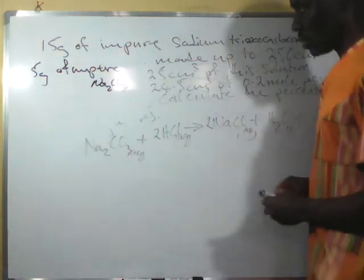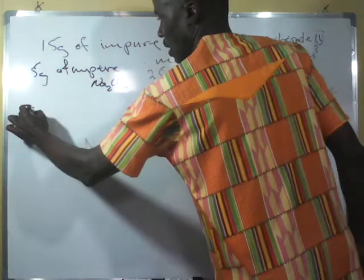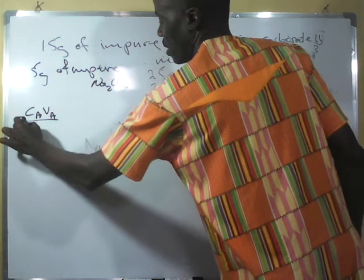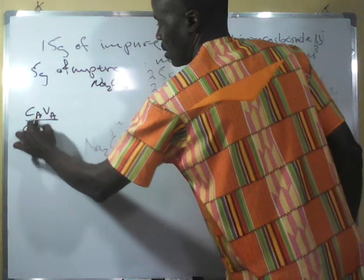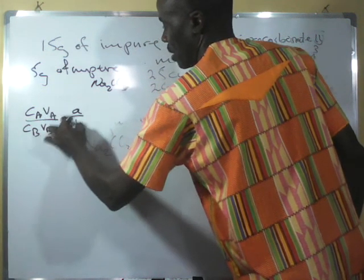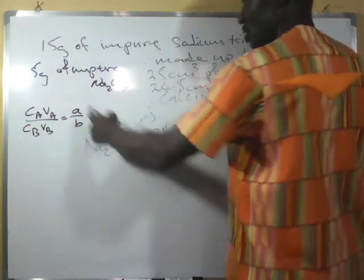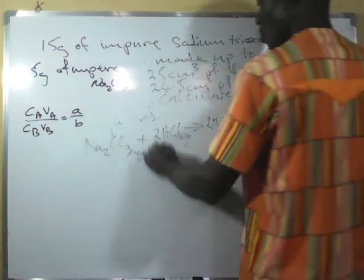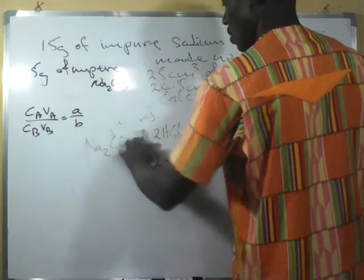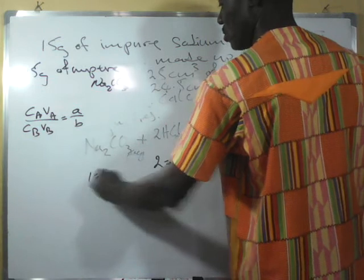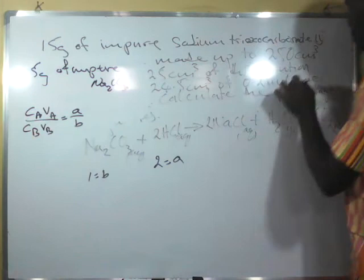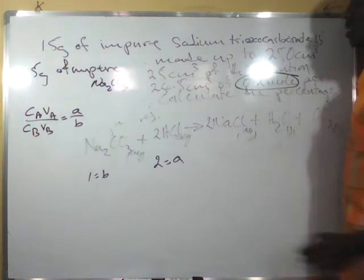We can use this equation: CₐVₐ / CbVb = a/b, where a and b stand for the mole ratio from the balanced equation. The coefficient for acid is a and for the base is b. The concentration of the acid is 0.2 mol/dm³.